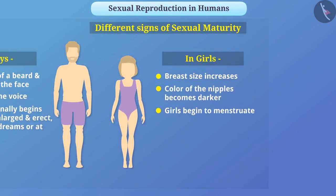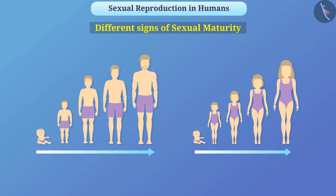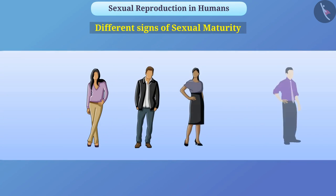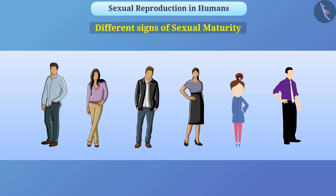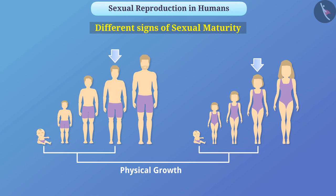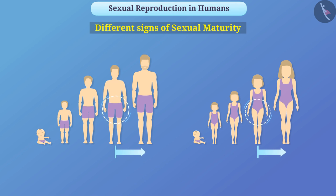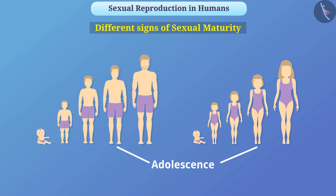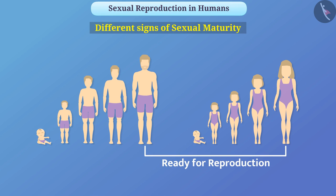Keep in mind that these changes occur slowly over time and may occur at different ages in different individuals. It is not necessary that all changes occur in a person at the same time. From birth to adolescence the body primarily focuses on physical growth, but as the rate of physical growth slows down, the reproductive tissue begins to develop. This period of adolescence is called puberty. Males and females become ready for reproduction after sexual maturity.